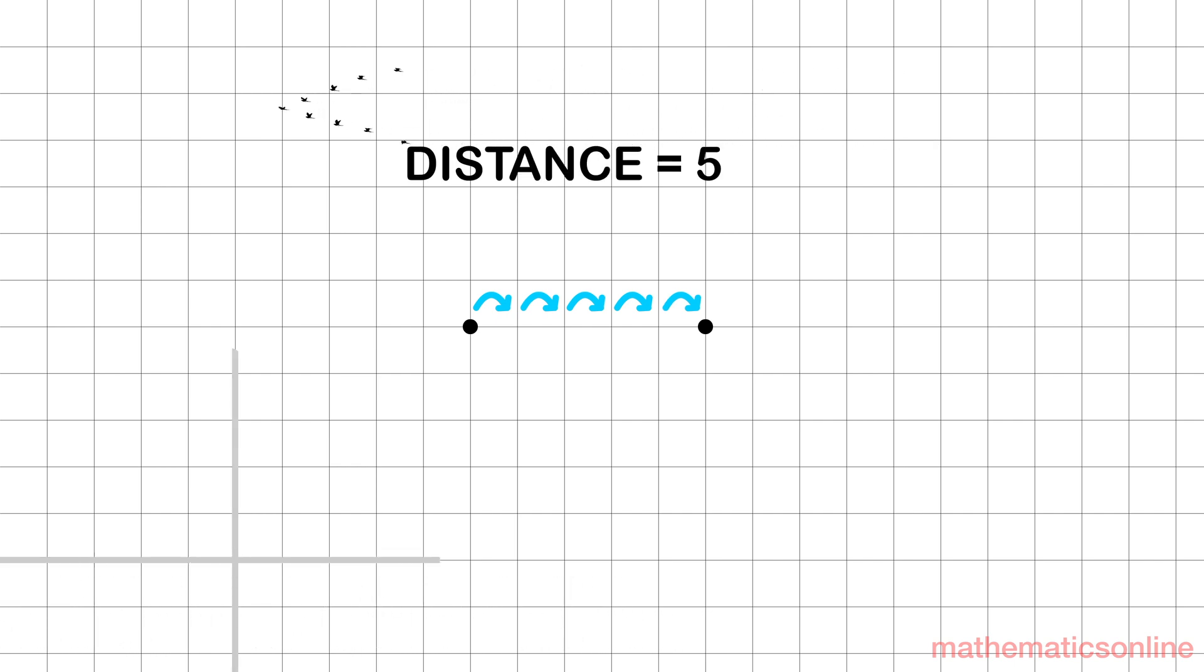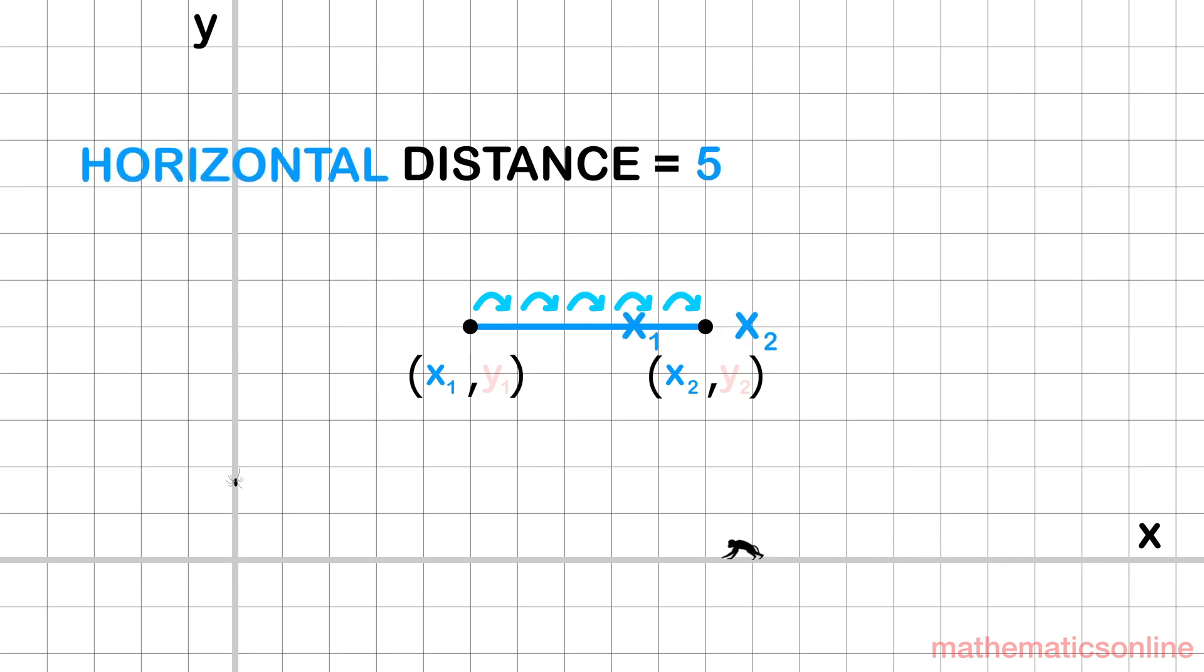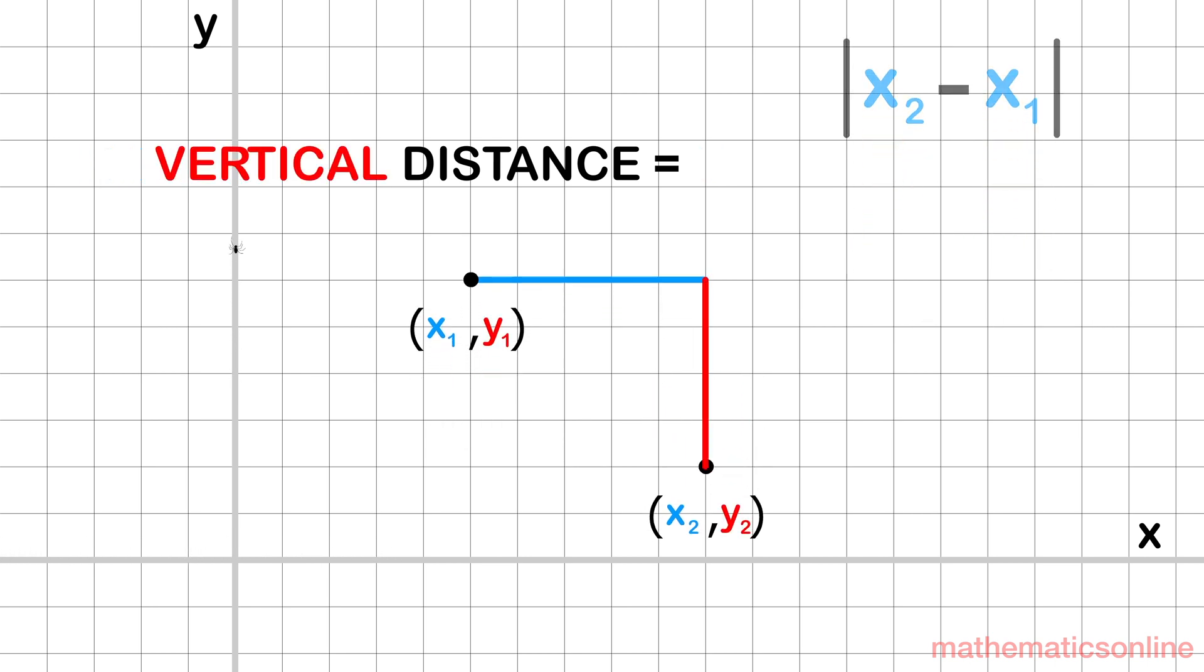But once the points are set on an x-y plane, it has its own coordinates to take into account. The horizontal distance is found by taking the absolute value of x2 minus x1. If you wanted to find the vertical distance, you take the absolute value of y2 minus y1.